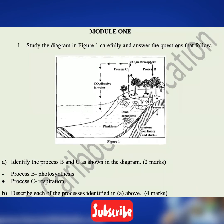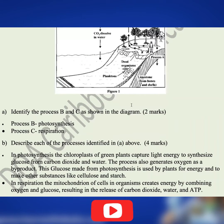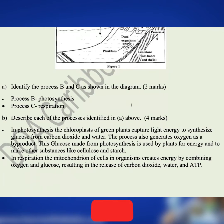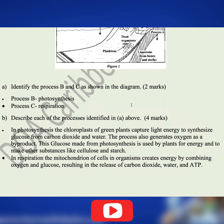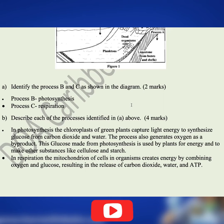So we can conclude that process C is respiration. Part B says describe each of the processes identified in A above. In photosynthesis, the chloroplasts of green plants capture light energy to synthesize glucose from carbon dioxide and water. For respiration, the mitochondrion of cells in organisms create energy by combining oxygen and glucose, resulting in the release of carbon dioxide, water, and energy.